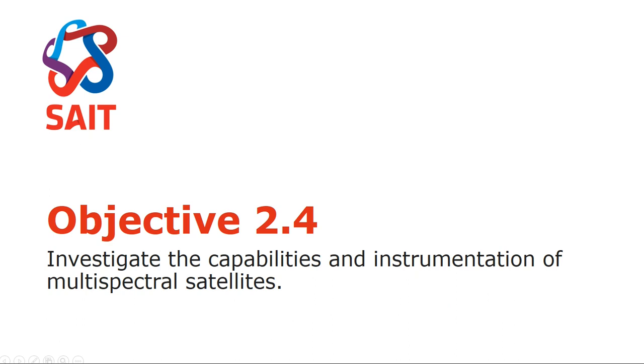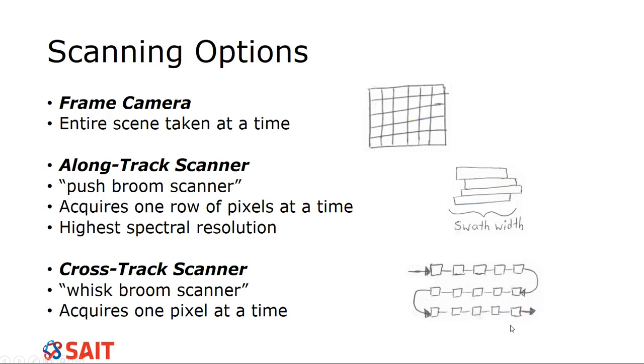So moving into Objective 2.4, this is looking at the capabilities of multispectral satellites. So there are a couple types of sensors. So this is what we're going to be examining here, and not so much the platform. So we're moving on from the satellite platform to what equipment is on there. So scanning options, we have three different ways of doing it. We have a frame camera, which takes the entire scene at one time. So this is what you guys are most used to. You take a photograph, and it captures the entire photo all at once. Done, right?